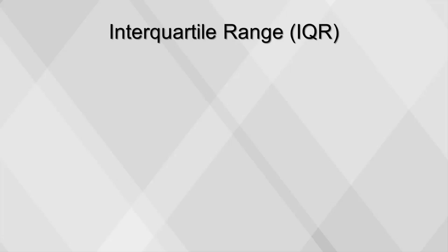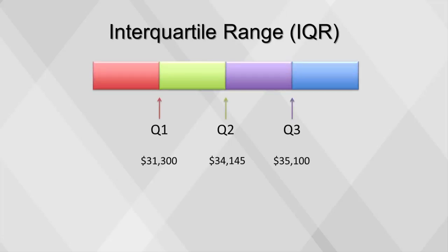To find the interquartile range, first separate the data into quartiles, and then subtract Q1 from Q3.